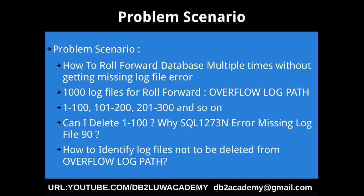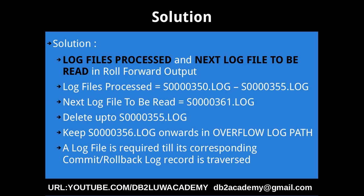Sometimes that error comes. So how do you identify the log files that should not be deleted from the overflow log path between subsequent roll forward operations? The solution is: when you issue the roll forward command, in the roll forward output you will see 'log files processed' and 'next log file to be read'.